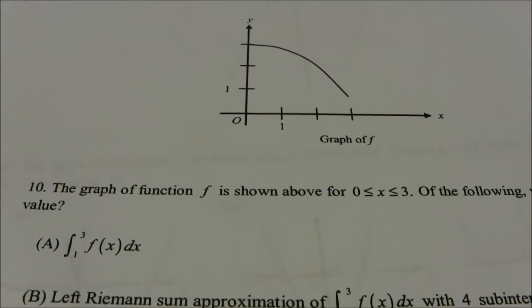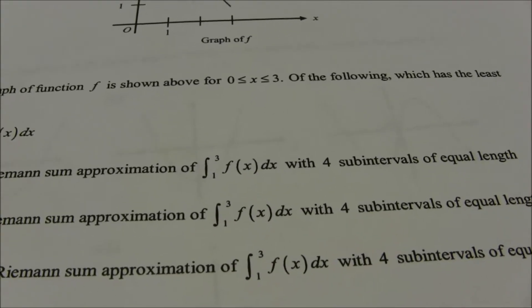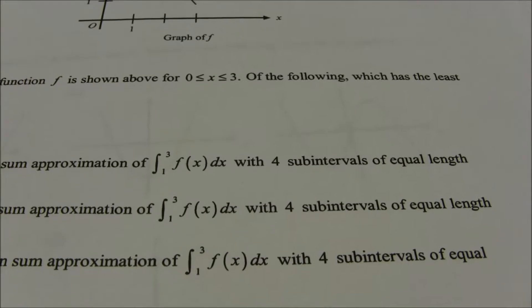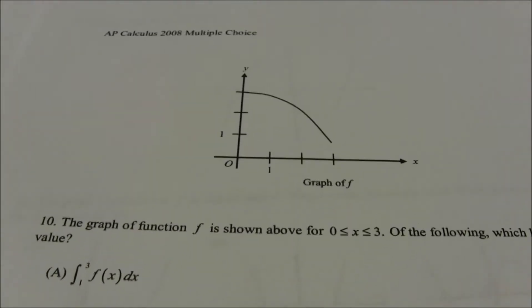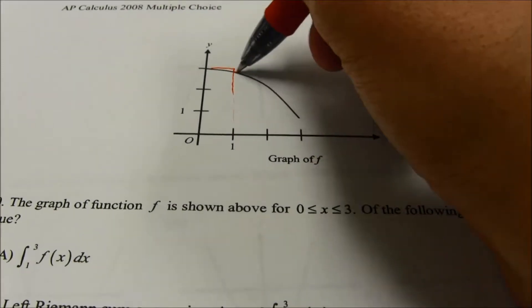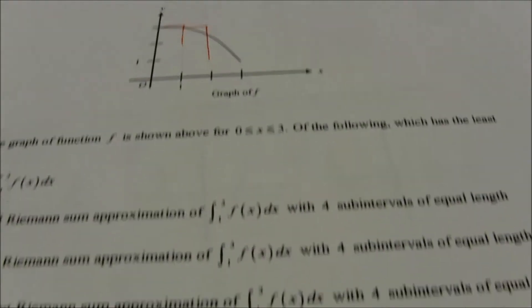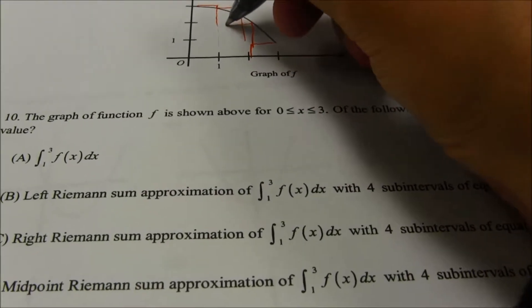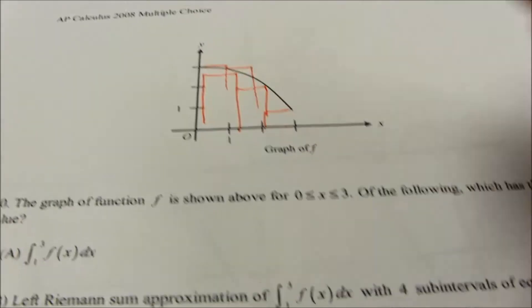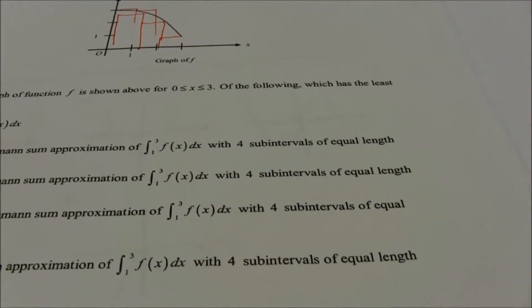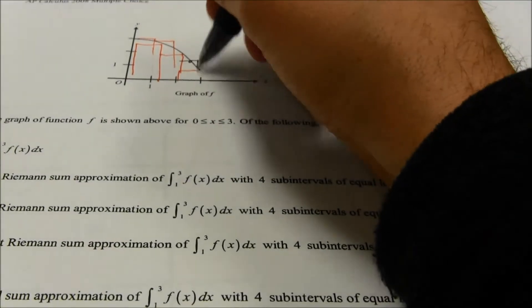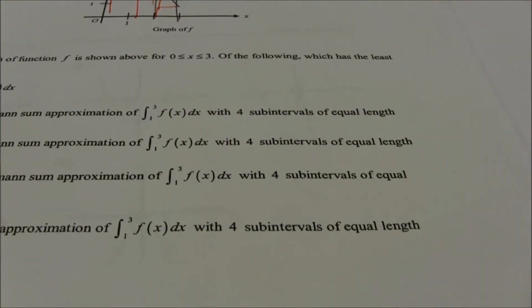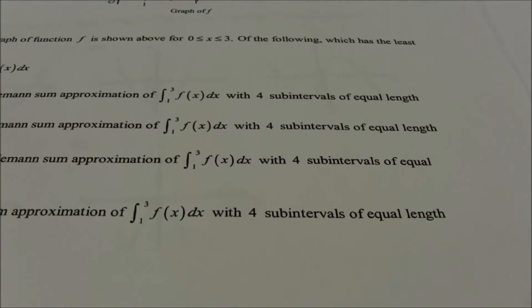Number 10: which has the least value — the integral from 1 to 3 compared to various Riemann sum approximations? The function is decreasing. The left Riemann sum picks values on the left — the high points — so it's bigger than the actual integral. The right Riemann sum picks values on the right — the low points — so it's under the curve and the lowest so far. The midpoint Riemann sum has rectangles partly above and partly below, so it won't be less than the right sum. The trapezoidal approximation is slightly under but not by much. The answer is C — the right Riemann sum.